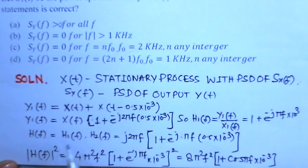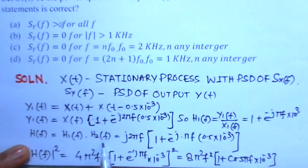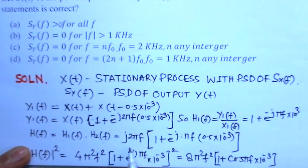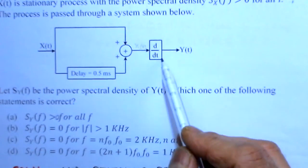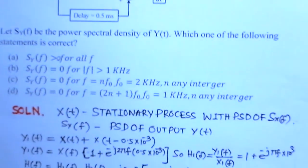Now we have to find Y(t), so H(f) is equal to H1(f) times H2(f). We can apply e to the power j 2 pi f because of the d by dt function, the differential operator d by dt function.